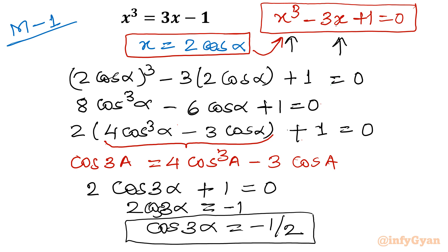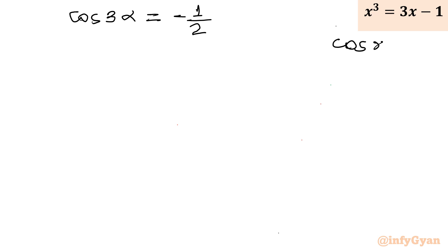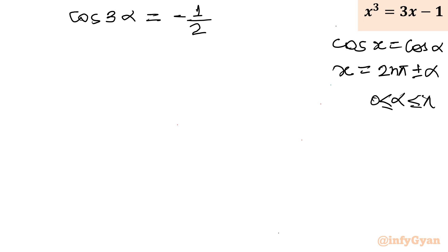We have now solved about 80% of the problem — only the general solution is left. We have cos(3α) = -1/2, which equals cos(120°). The general solution form is: if cos(x) = cos(α), then x = 2nπ ± α, where α lies between 0 and π. Let's apply this here.